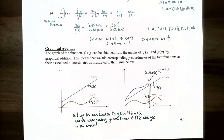This is a good place to stop our video. We talked about how to find the sum, difference, product, and quotient functions and also their domains, and we talked about graphical addition. If you have any questions about any examples in this video, please let me know, and I'll see you at the next video when we talk about composition of functions and their domains.